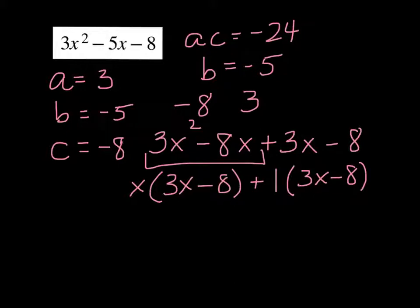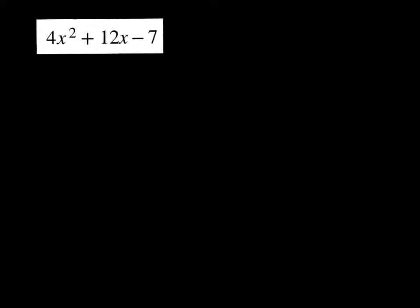So this is (x + 1) times (3x - 8). Double check by foiling real quick. X times 3x is 3x², x times minus 8 is minus 8x, 1 times 3x is 3x, and we add those together we get negative 5x, and 1 times minus 8 is minus 8. I think we factored correctly.